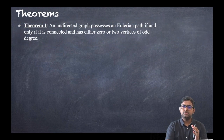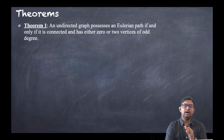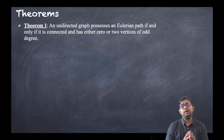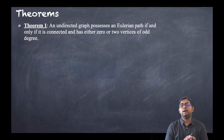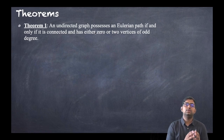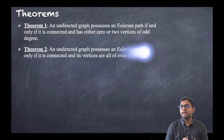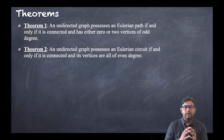The first theorem states: an undirected graph possesses an Eulerian path if and only if it is connected and has either zero or two vertices of odd degree.